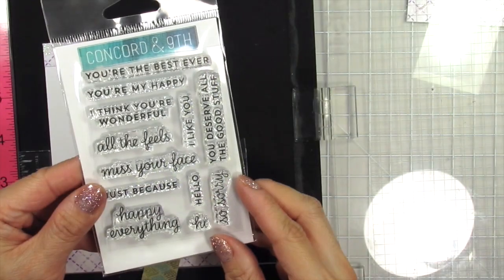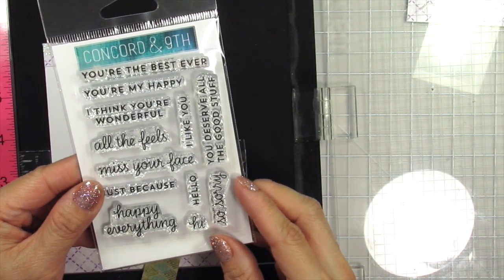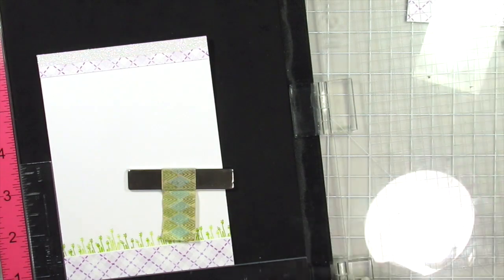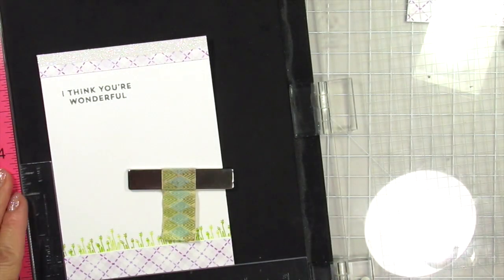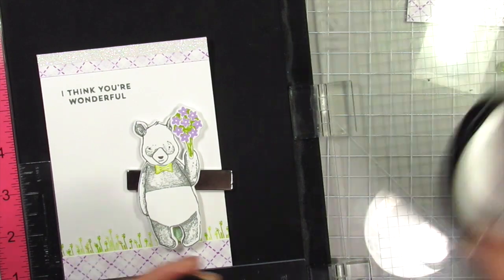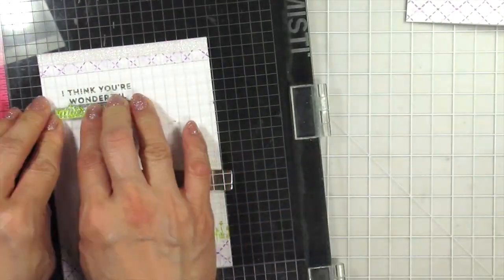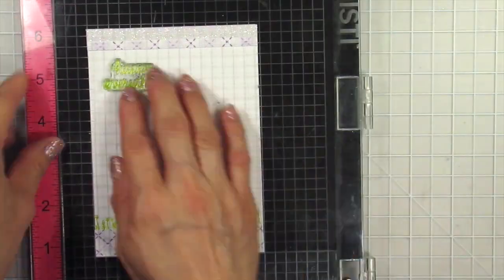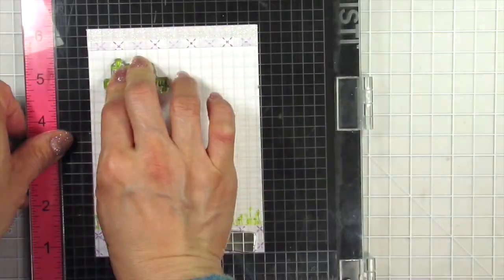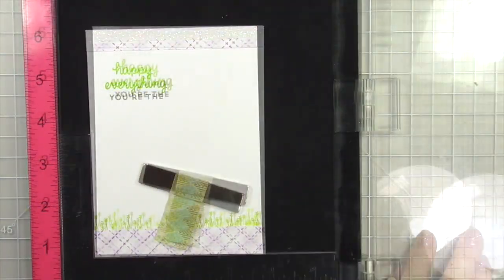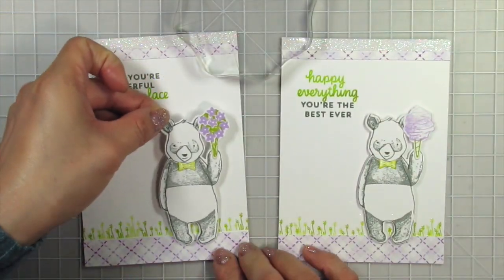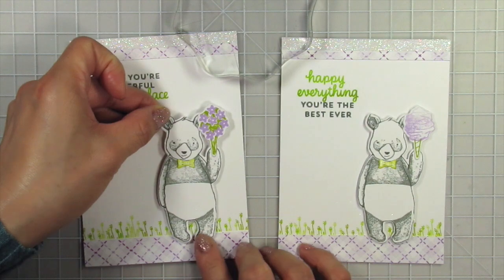For the sentiments I end up using the Lots to Say mini stamp set which has so many great sentiments. I love that you can mix and match the classic font with the scripted fonts and that's exactly what I'm going to do here. I stamp the first part of the sentiment with Cloudy Night, the same ink color I used to fill in the panda. Then I use the rock and roll technique with Parrot and Olive inks to create an ombre effect for the second part of the sentiment. I do the opposite with the sentiment on the second card. After the sentiments are stamped I use foam tape to attach the pandas to the card bases.